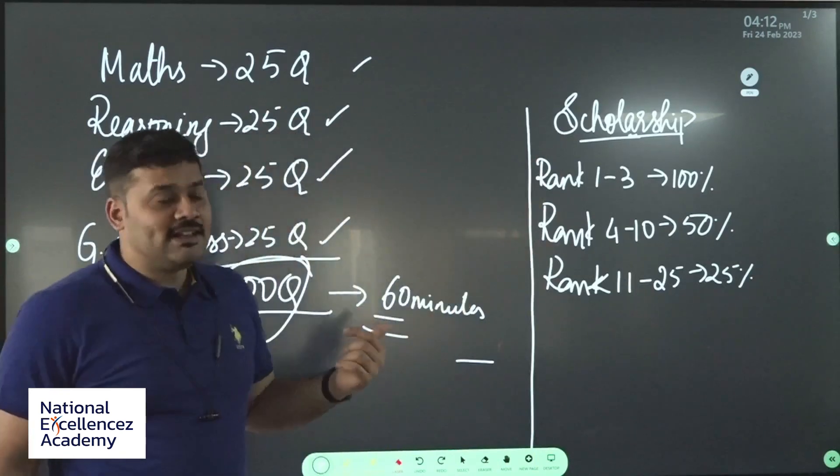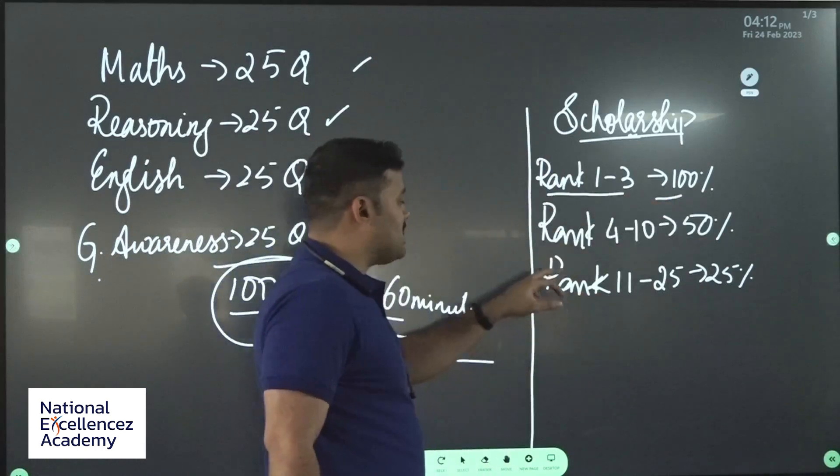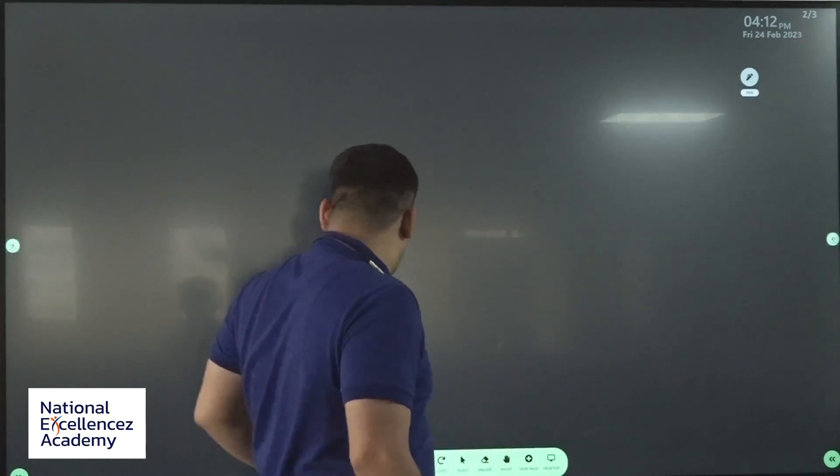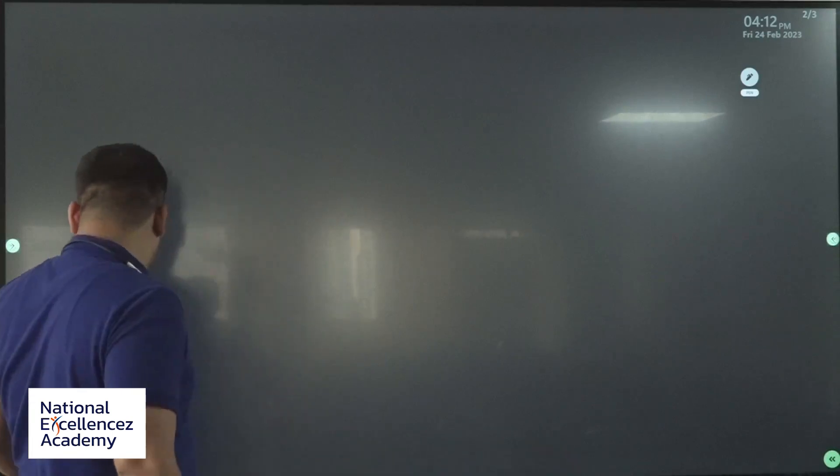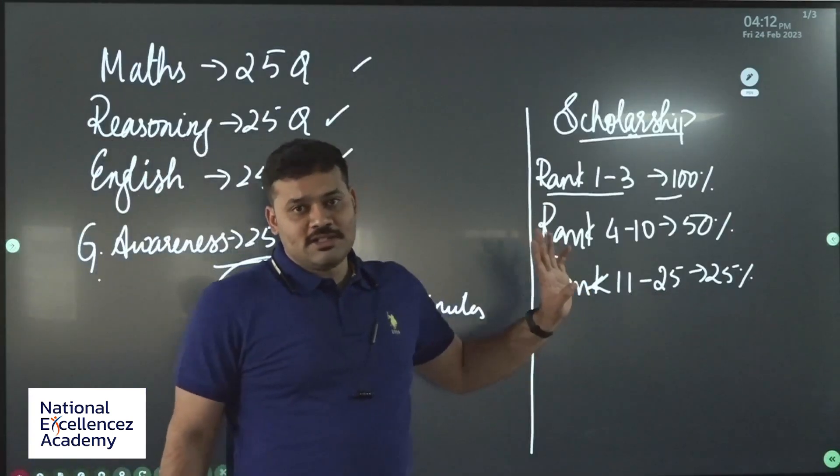So, what is the scholarship? First, the top three rankers get 100% scholarship. Rank 4 to 10 is 50% scholarship. Rank 11 to 25 is 25% scholarship.